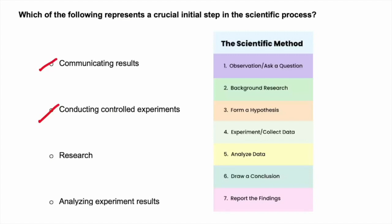And analyzing experiment results comes towards the end of the process as well. So the crucial initial step in the scientific process here would be conducting research. Researchers must first gather information about a topic so we can understand the existing findings and theories. So research would be the correct answer for this question.